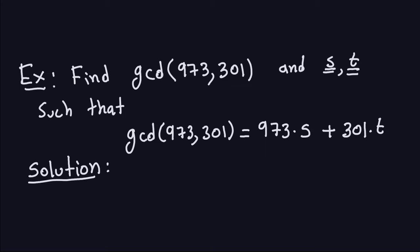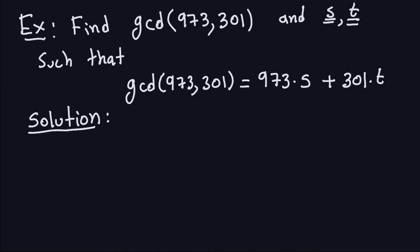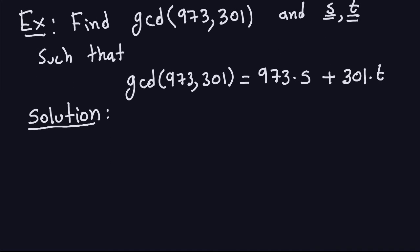We get started exactly the same as with all GCD problems. We're going to apply the Euclidean algorithm, but we're going to add a little extra step to find the values of S and T. So I'm going to take the numbers and start doing repeated divisions.